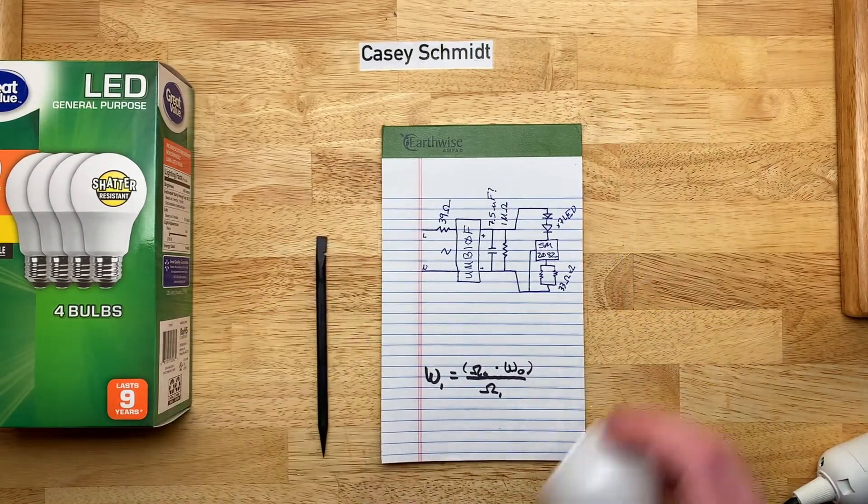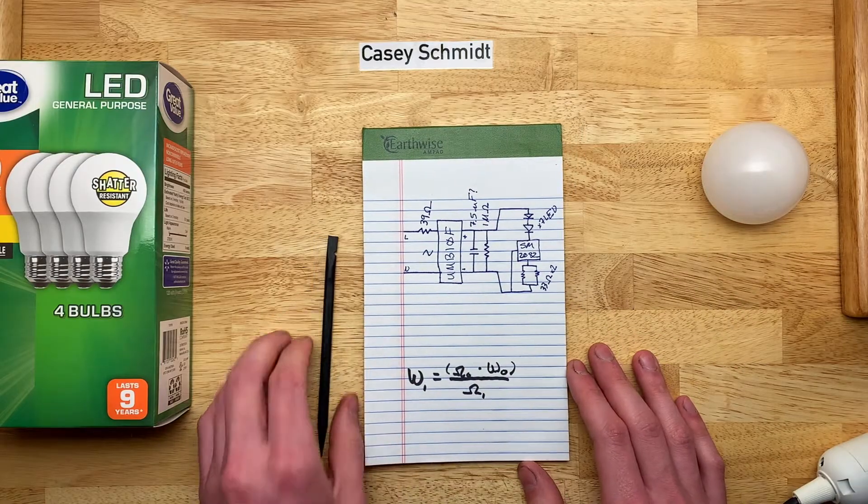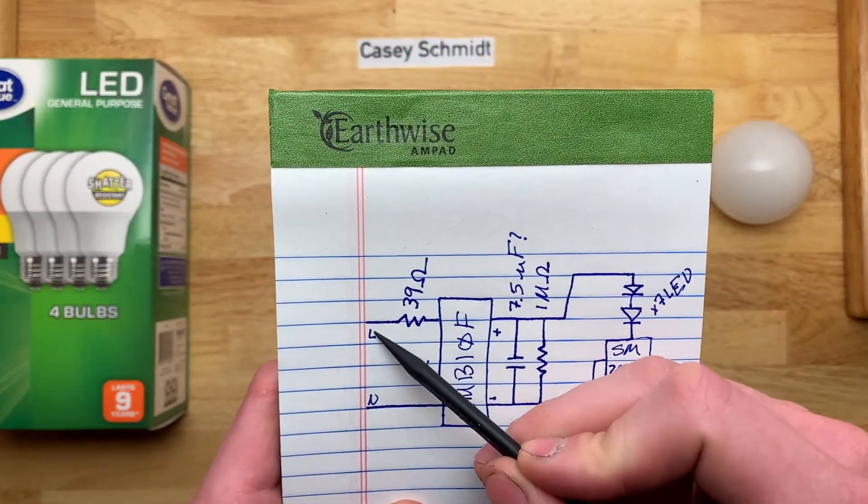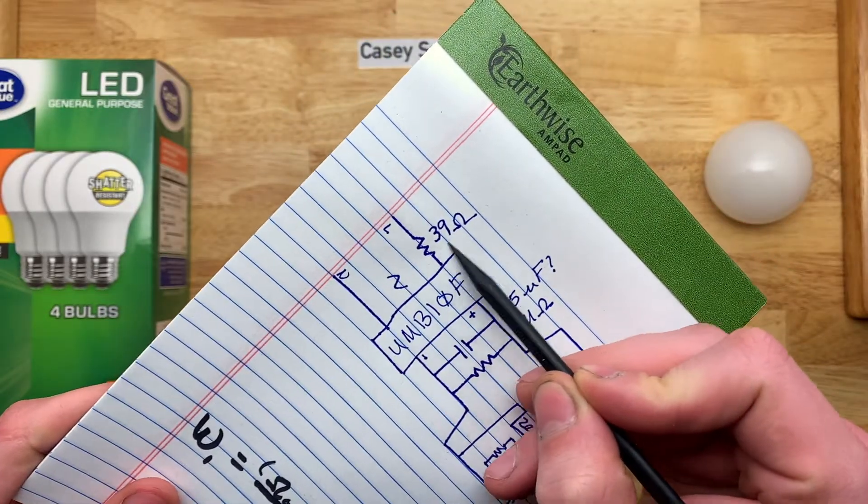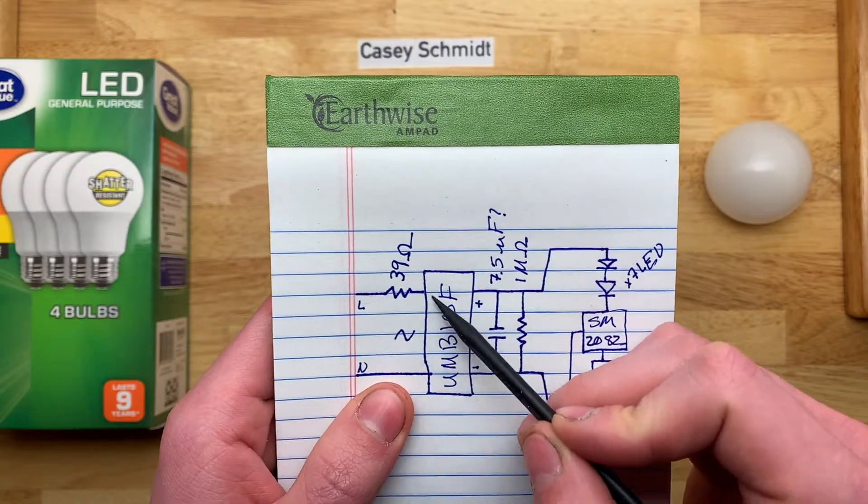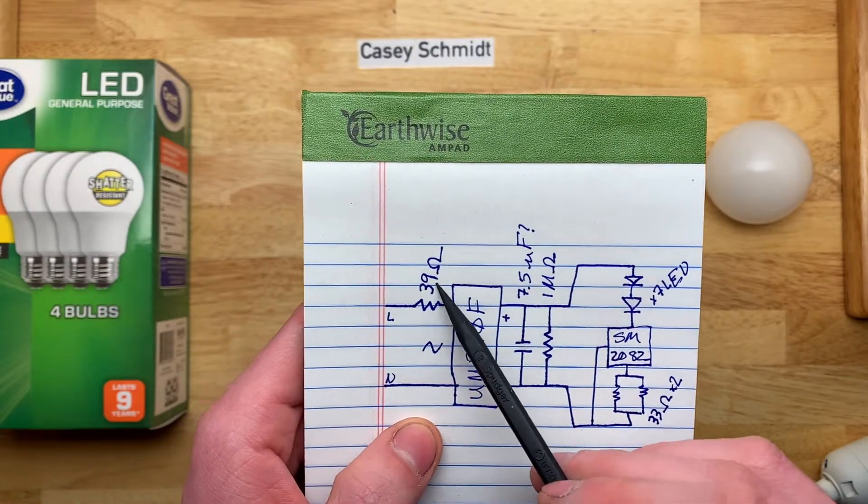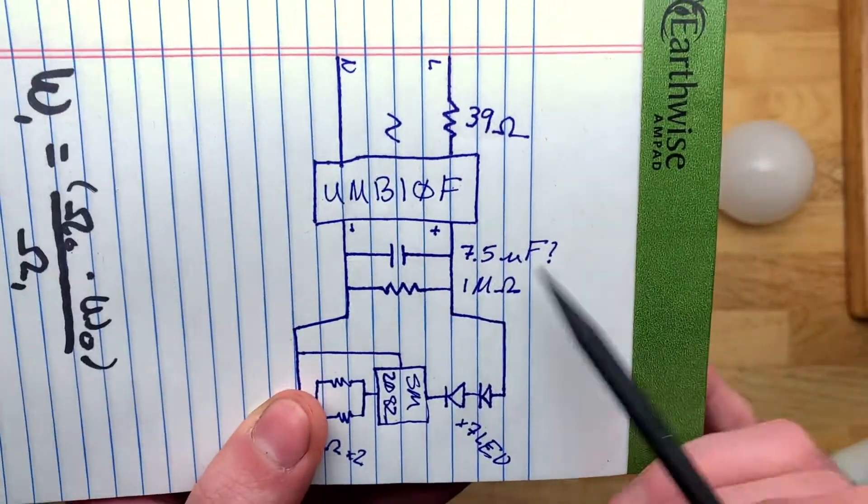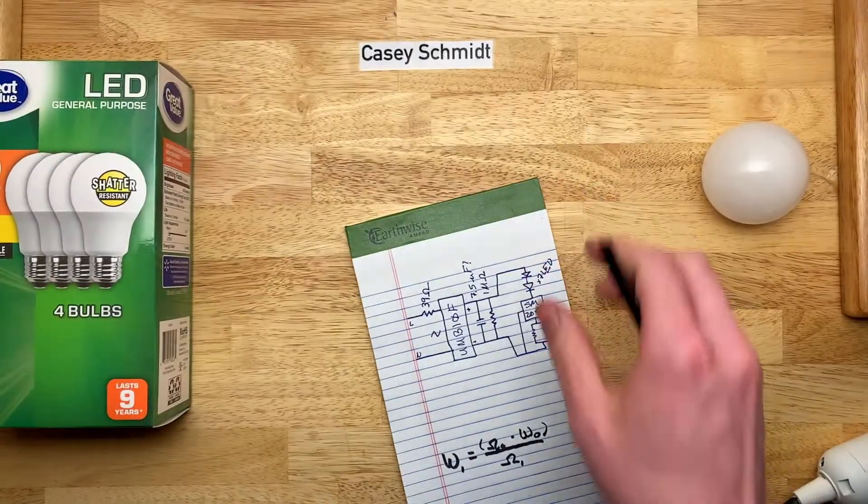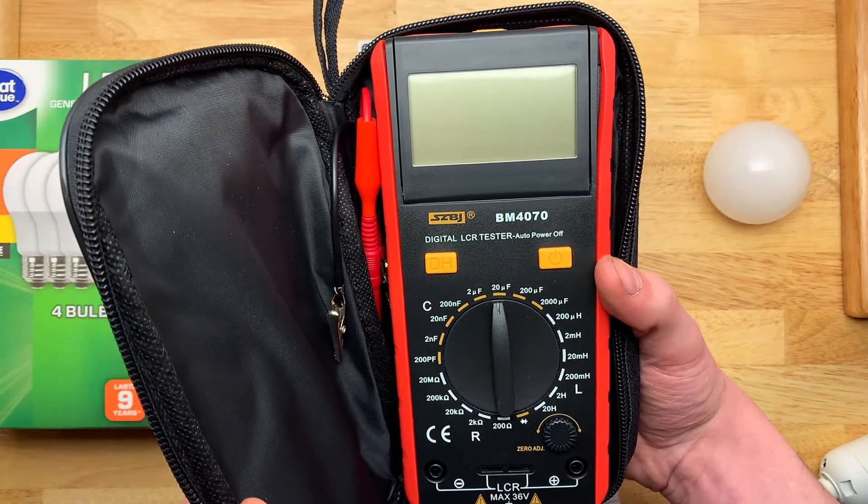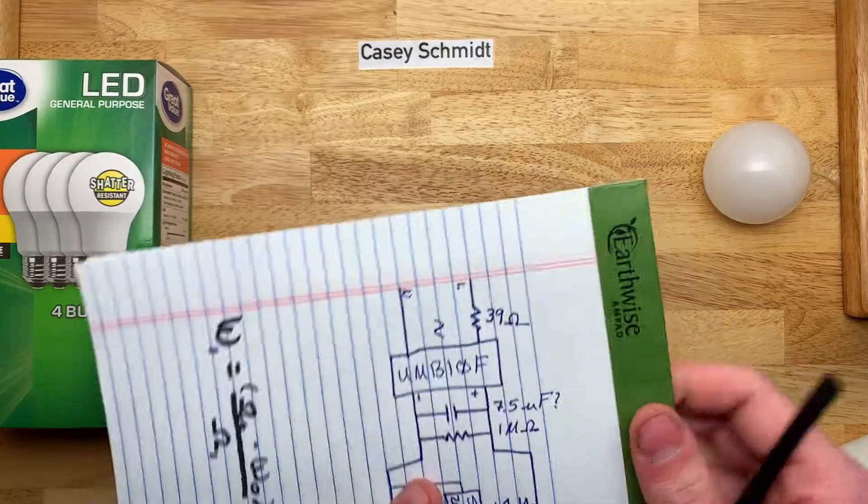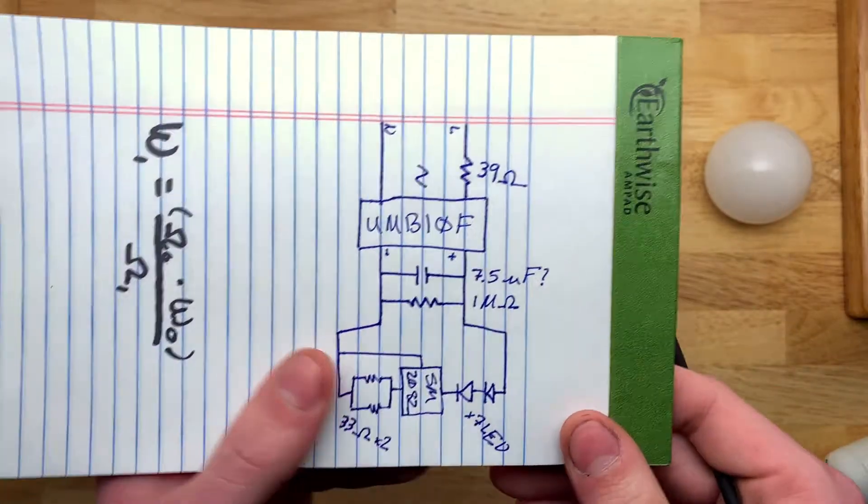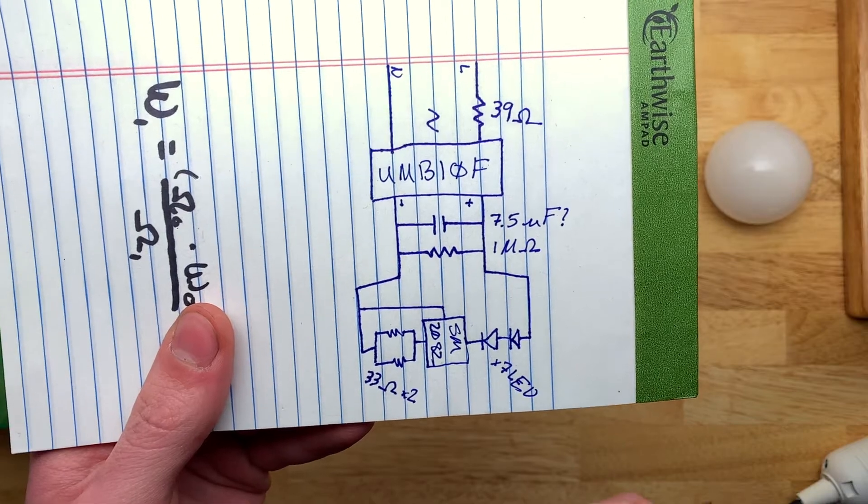Here is the schematic for this. It's basically identical to the one that Clive showed off. A couple things to note here. One is on the live coming in, we have what I measured at 39 ohms resistance between the live and the input for the bridge rectifier. I don't know how accurate that's going to be because it's in circuit, but I thought I'd give it to you anyway. Same thing, this capacitor here. I measured it with my cheapy LCR meter here at seven and a half microfarads, but I don't think that's a standard value. And it's also in circuit, so yeah, that's why I put the question mark there. But at least it gives you the ballpark of what it might be. And there's a one megaohm resistor across that probably to discharge it.